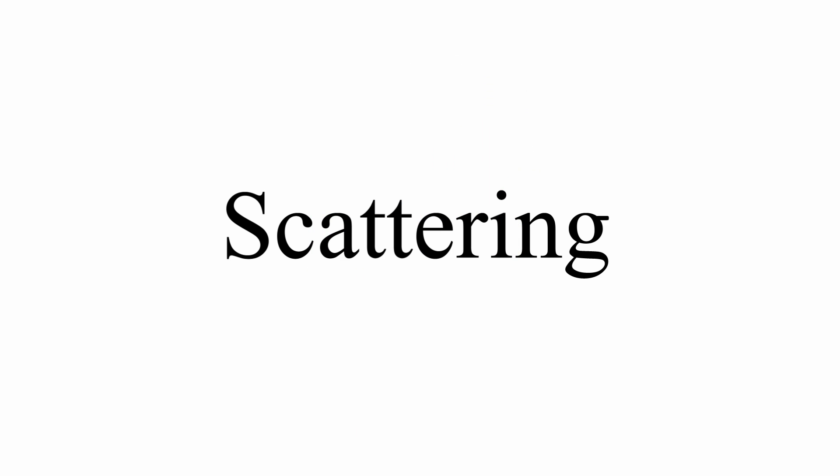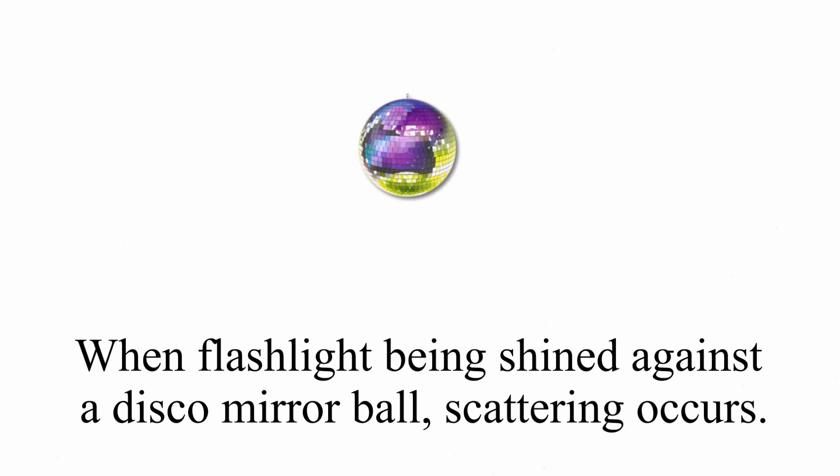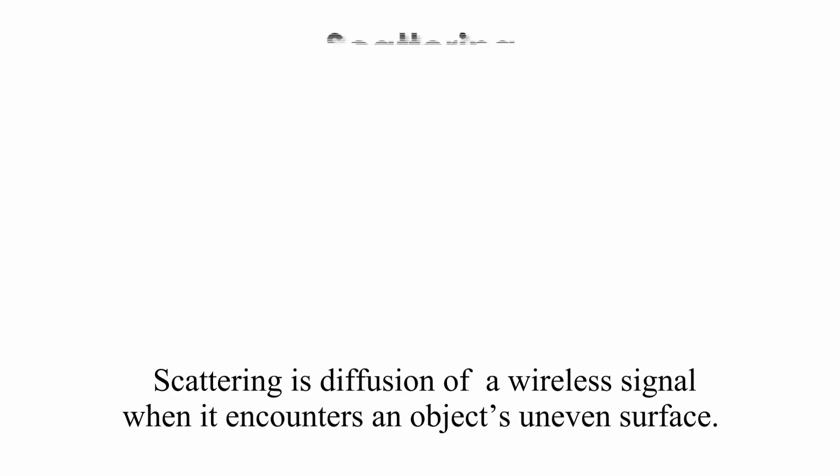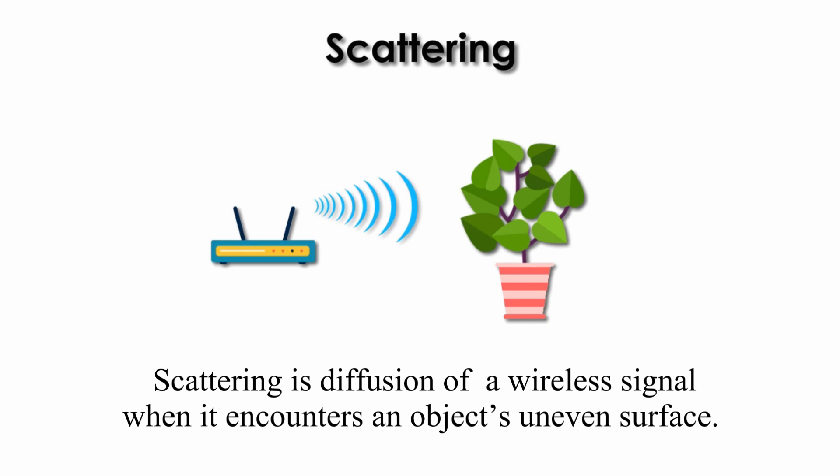Scattering. When a flashlight is shined against a disco mirror ball, scattering occurs. The same is true for wireless signal. Scattering is diffusion of wireless signal when it encounters an object on an uneven surface.